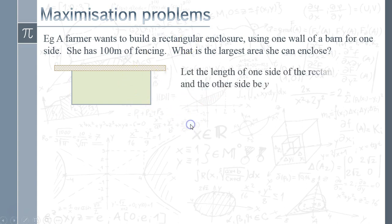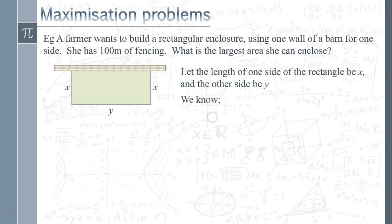Let's set this up in terms of the length of the sides of the rectangle. We're going to call one side x, so the opposite side is also x, and then we've got this side which we're going to call y. The first thing we can say is that the area is simply x times y.